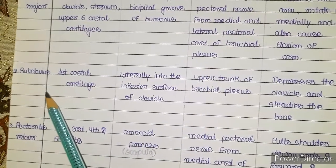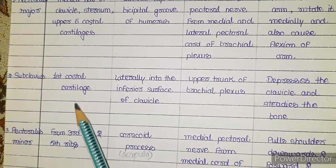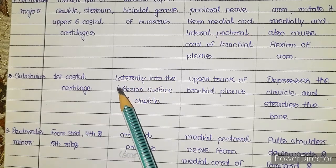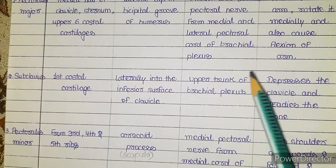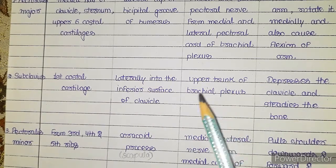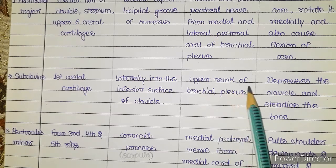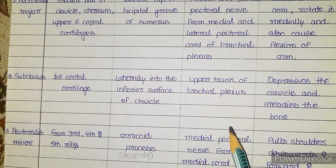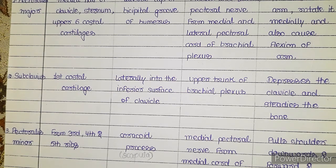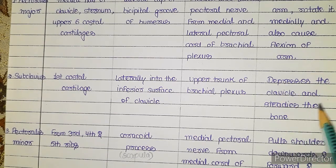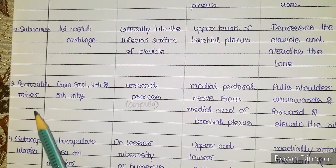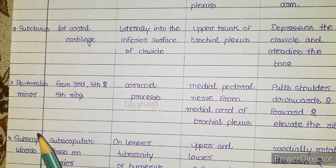The next muscle is the subclavius muscle. It starts from the first costal cartilage and inserts into the inferior surface of the clavicle. The nerve supply of subclavius is from the upper trunk of the brachial plexus — a direct branch from the upper trunk. The action of this muscle is that it depresses the clavicle downward and steadies the bone.